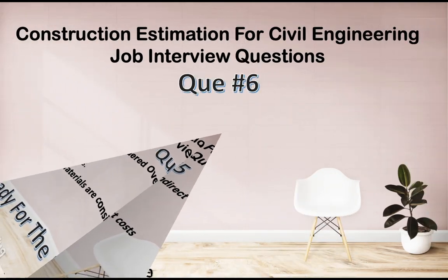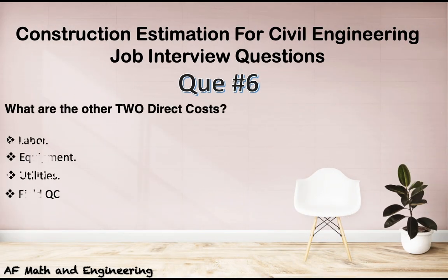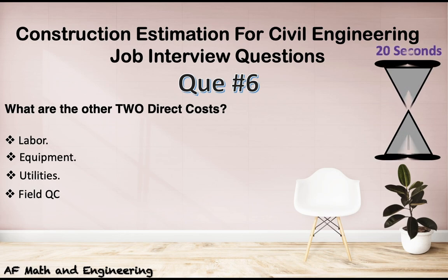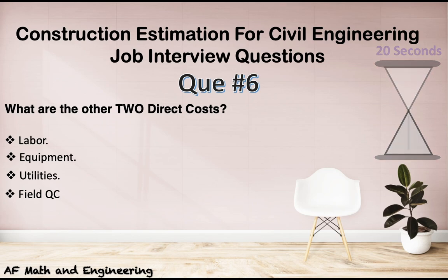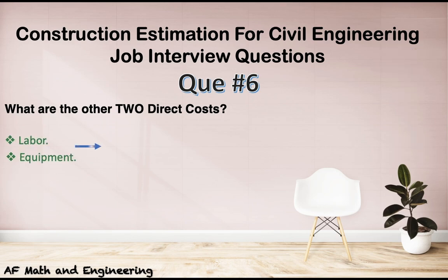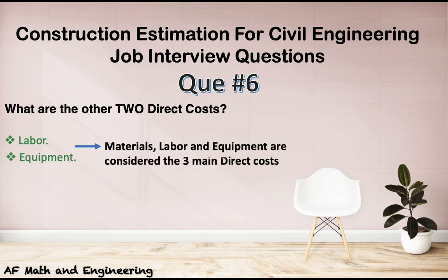Question six: what are the other two direct costs? The first one was material — out of that list, what are the other two? Time is up. The answer is labor and equipment. Materials, labor, and equipment are considered the three main direct costs in each project.